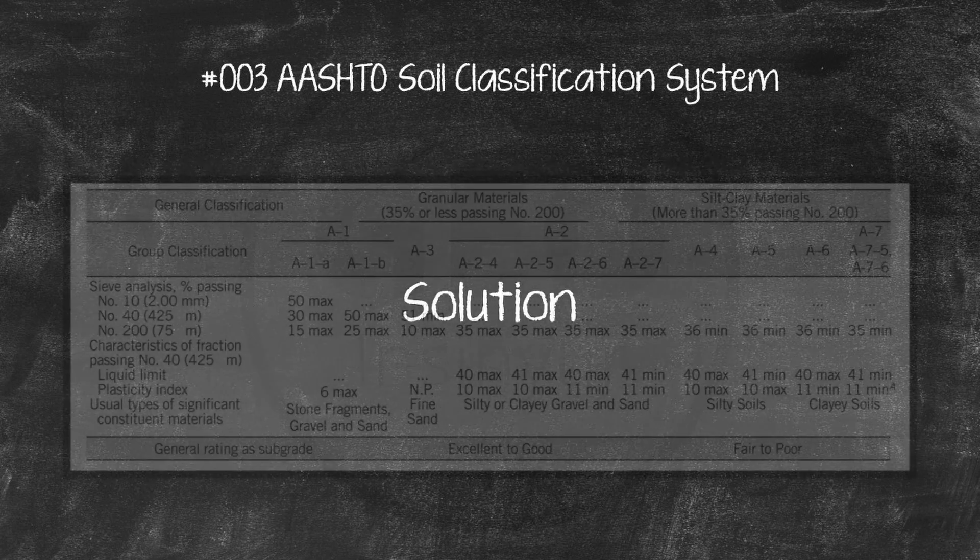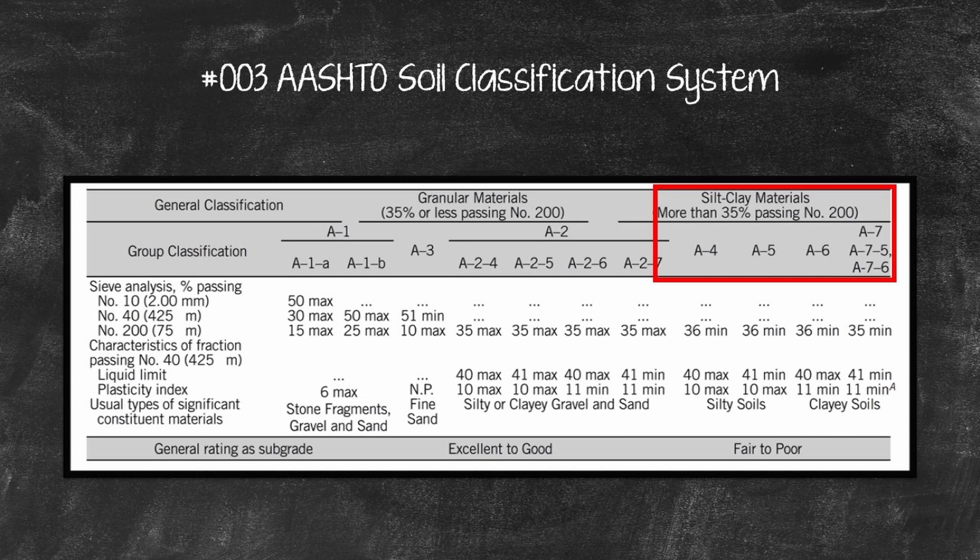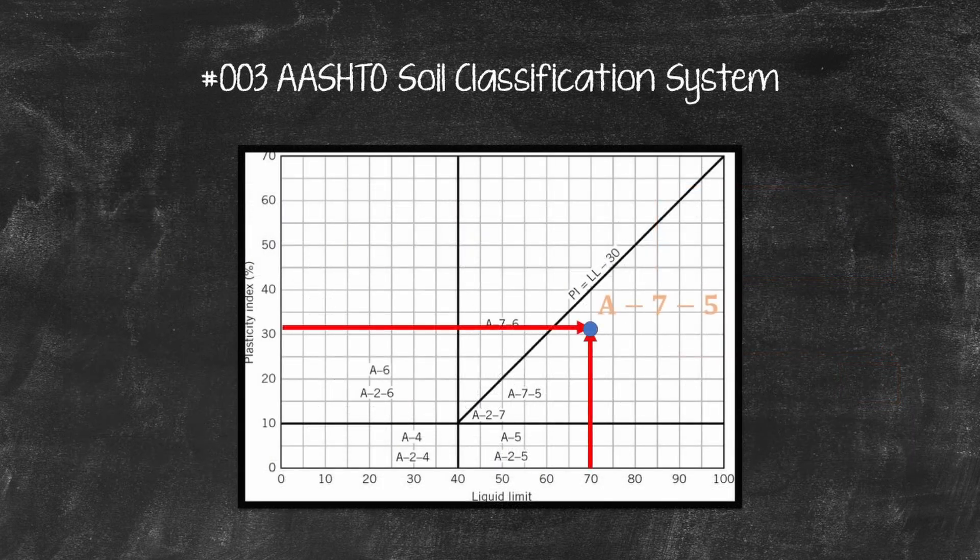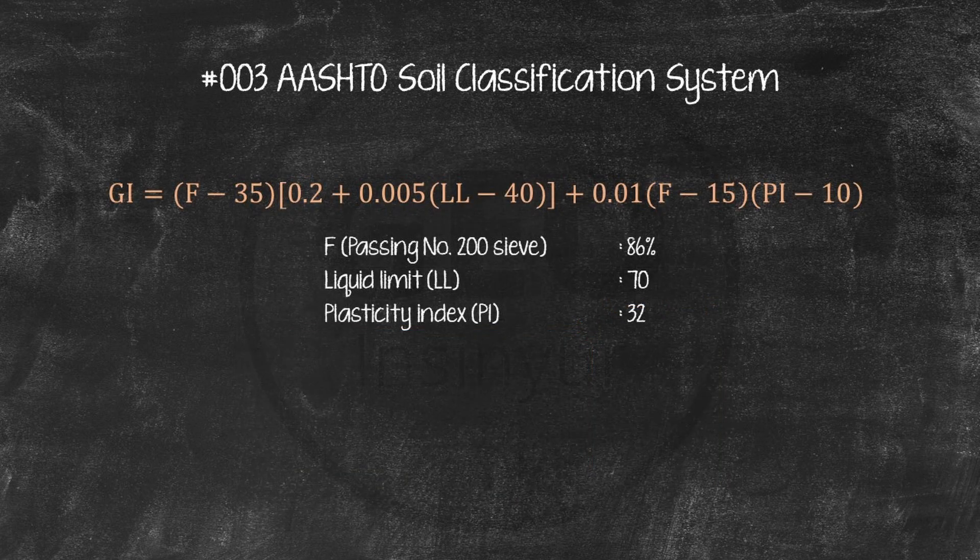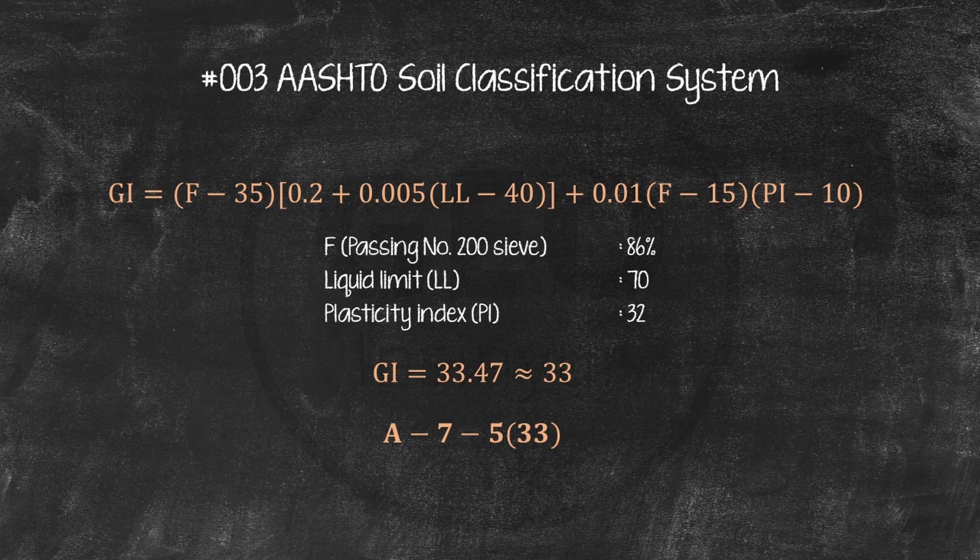Solution. Percent passing the number 200 sieve is 86%. So, it is a silty clay material, i.e., A4, A5, A6, or A7, as shown in the table. Proceeding from left to right, we see that it falls under A7. For this case, PI equals 32 and LL equals 70. So, this is A75. From GI equation. Now, F equals 86, LL equals 70, PI equals 32, so GI equals 33.47 equals 33. Thus, the soil is A75, 33.